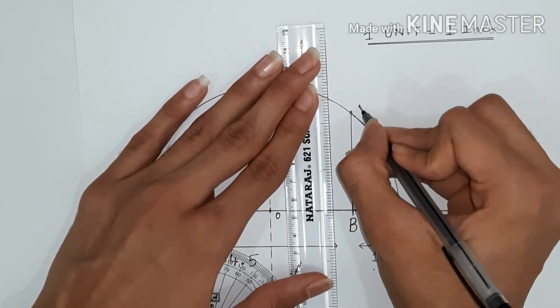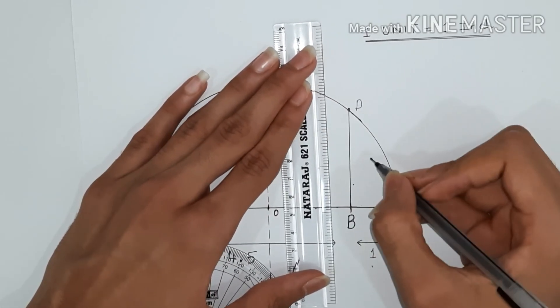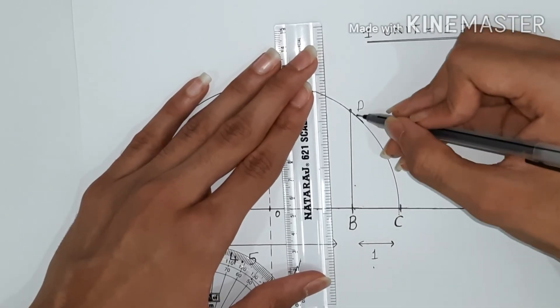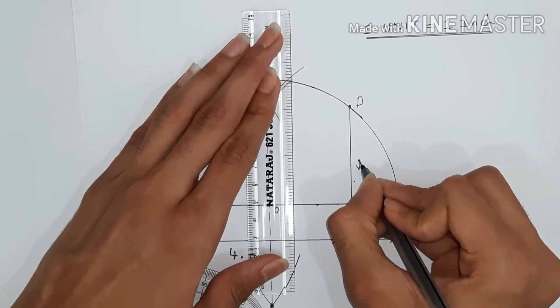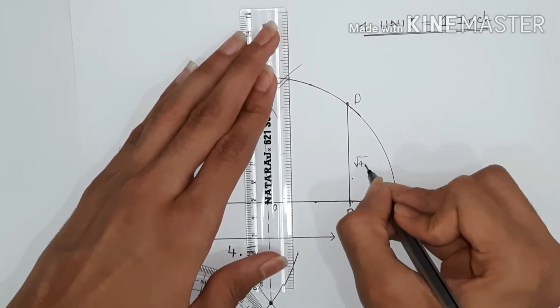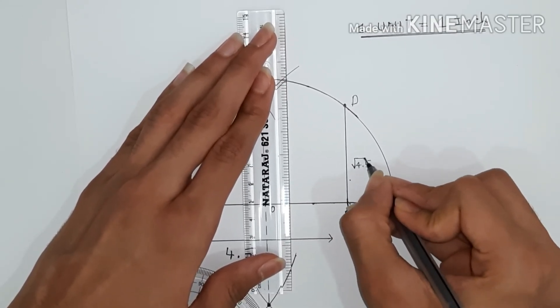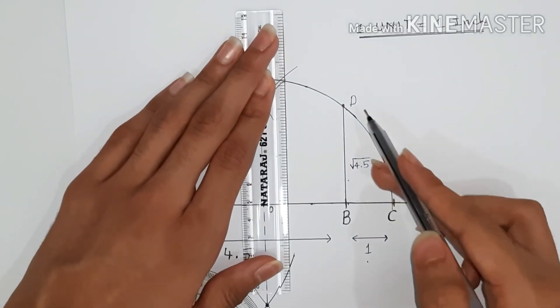The point where the line intersects with the previously created arc would be point D. Now the length of BD would be equal to square root 4.5. So we got square root 4.5, but now we need to represent it on the number line.